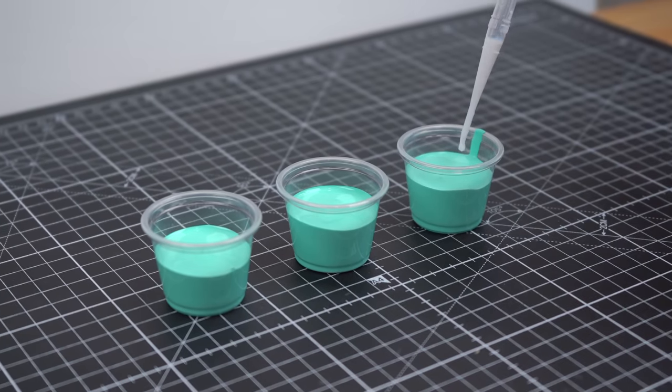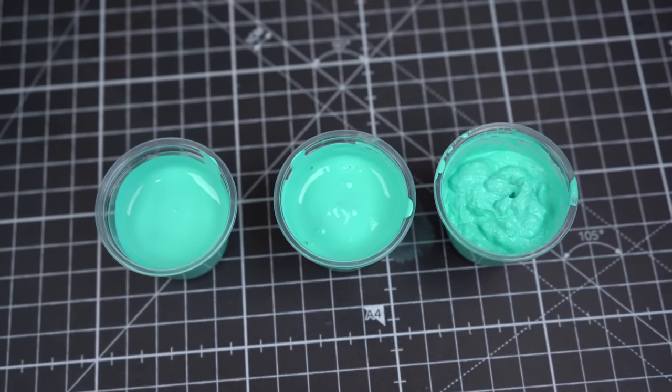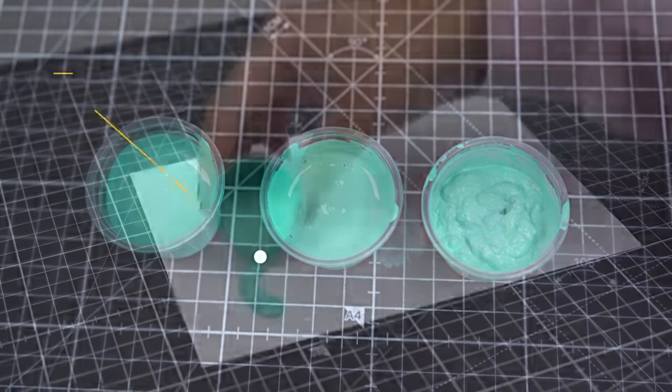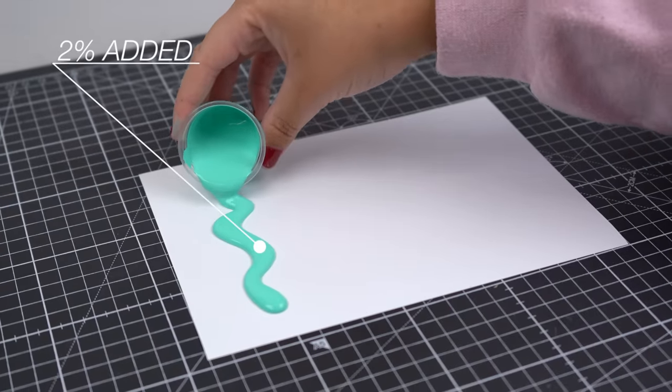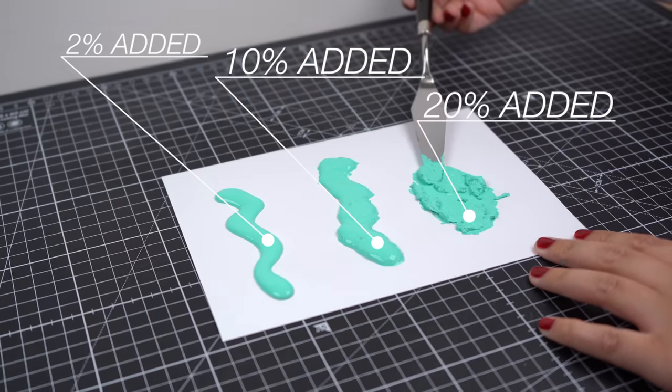I have three containers of paint here that I'll be adding different amounts of additive to. Once the paint is mixed thoroughly, we can take a look at how the amount of additive affects each paint mixture. About two percent will give you more of a smooth finish. Ten percent will give you a thickened finish that looks a bit like ice cream.